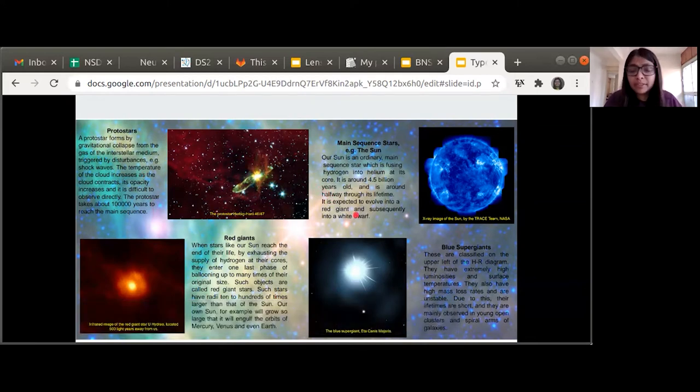Main sequence stars, for example our sun, have a core in which hydrogen and hydrogen combine to become helium. The main sequence stars can in future become a black hole, a neutron star, or a white dwarf depending on their masses.